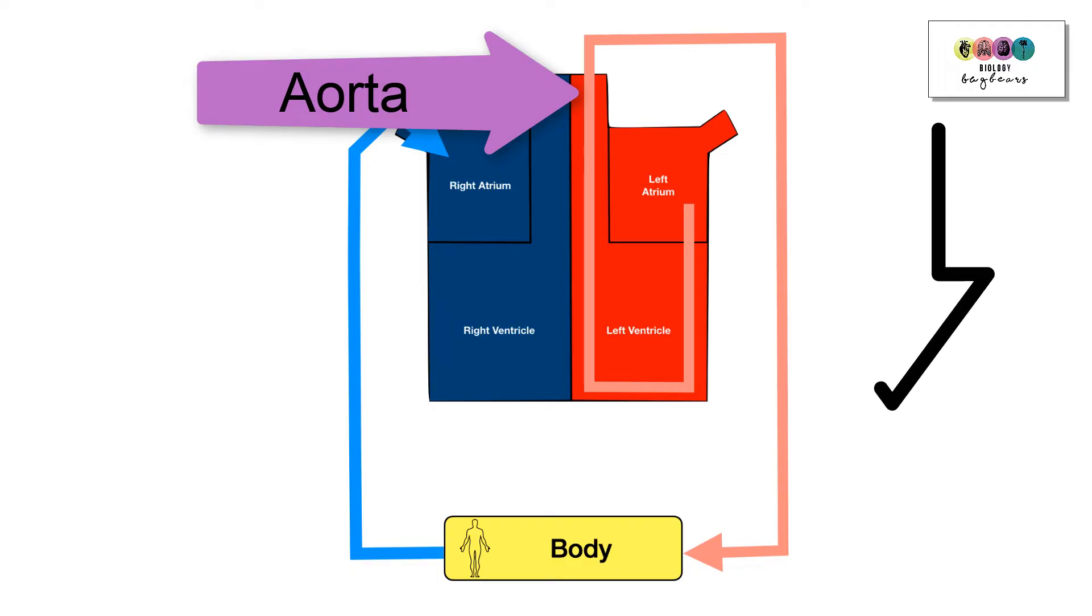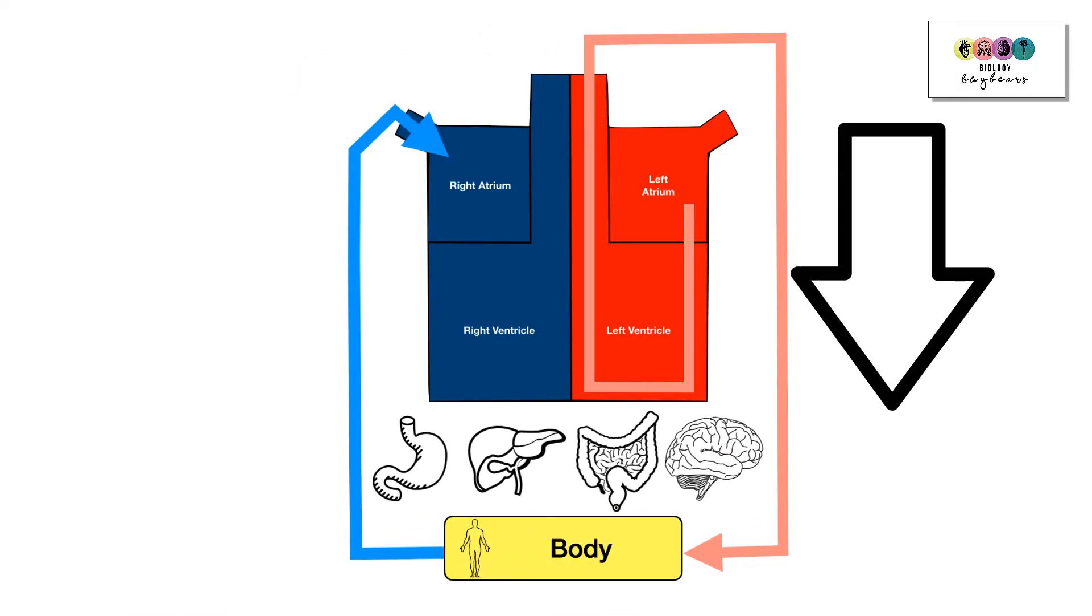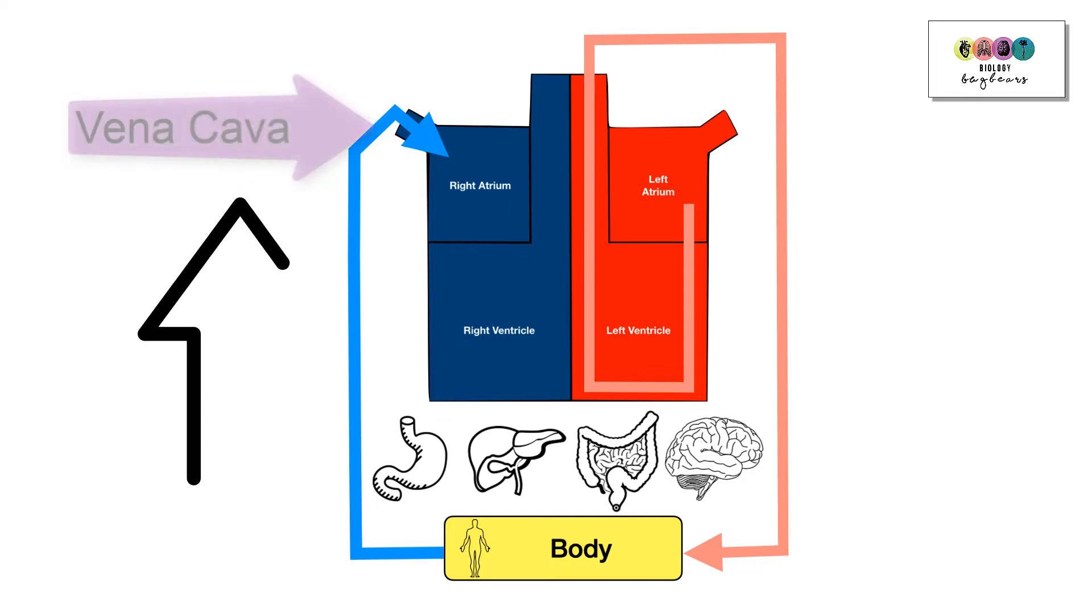This oxygenated blood is then delivered to all areas of the body, becomes deoxygenated and is returned in the vena cava to the right atrium.